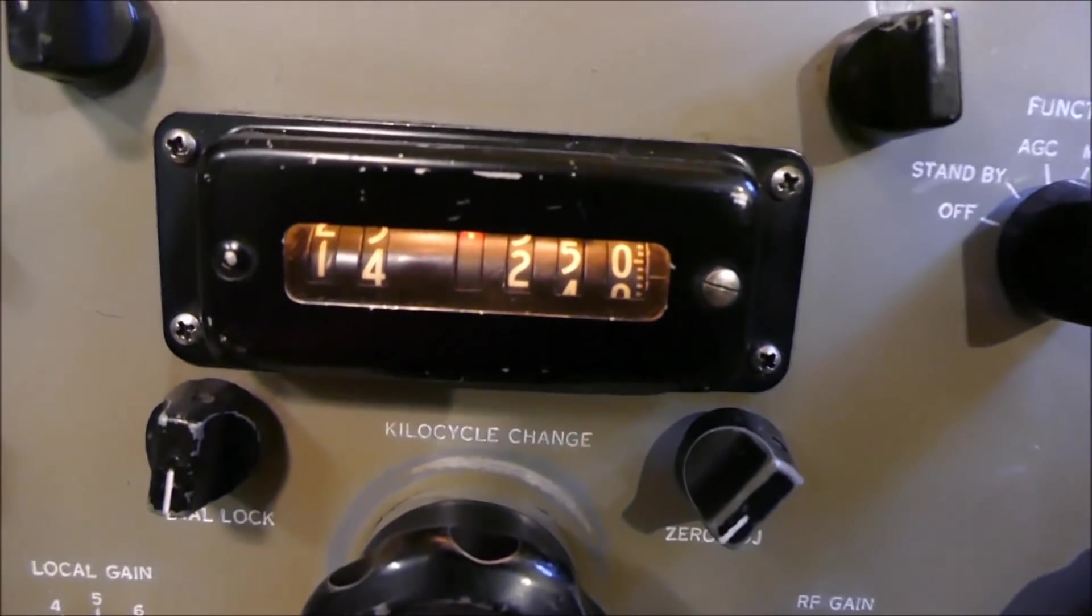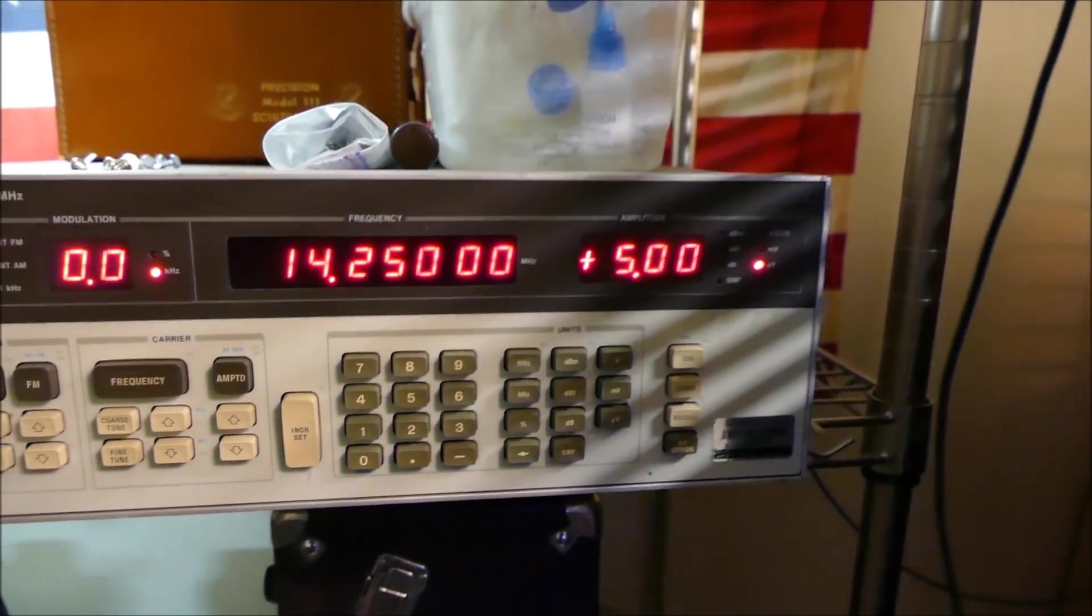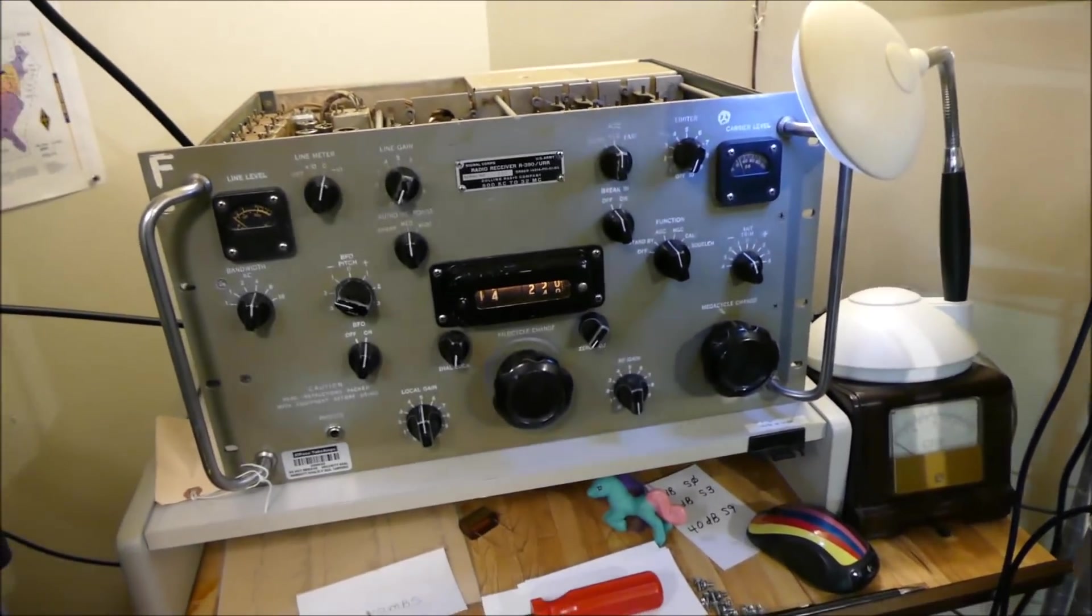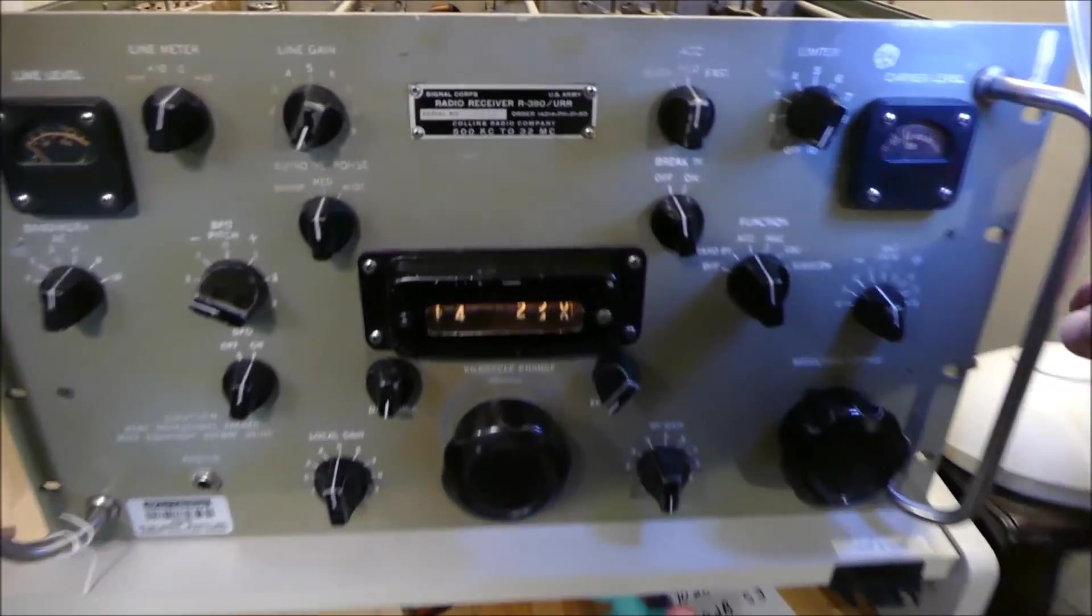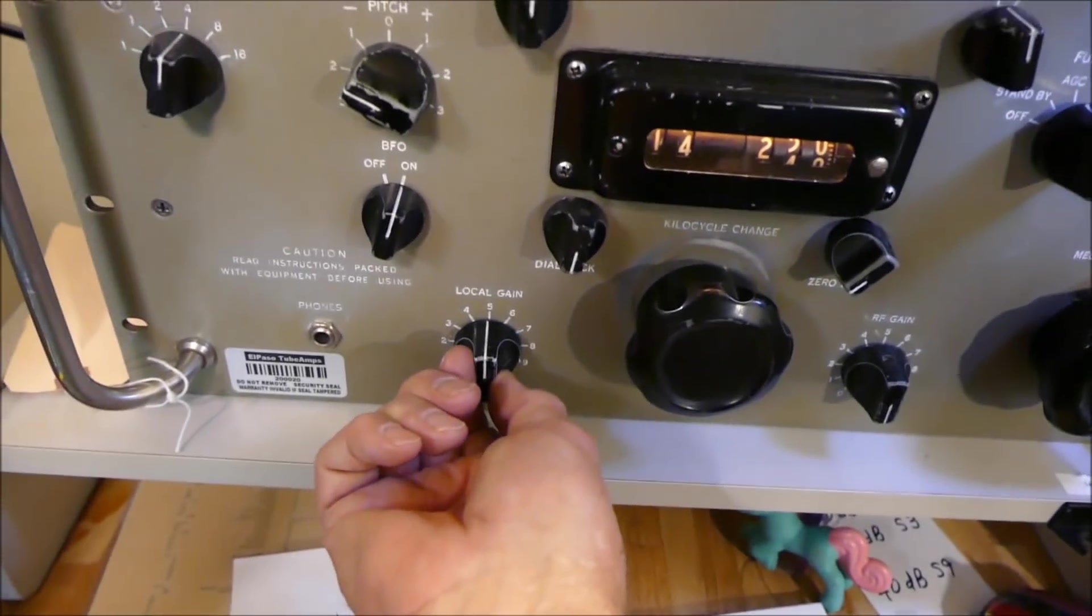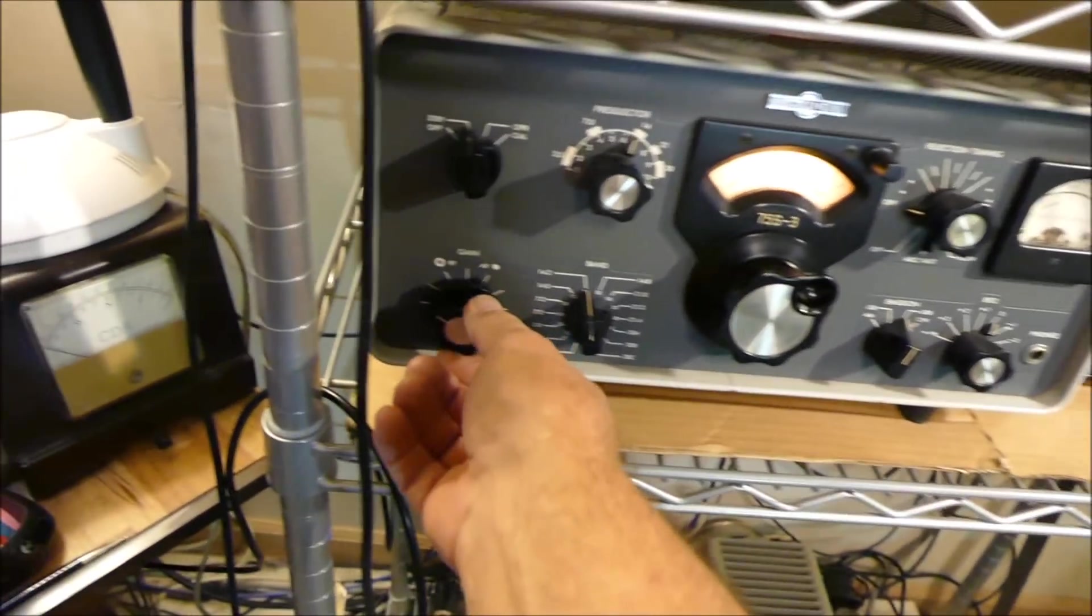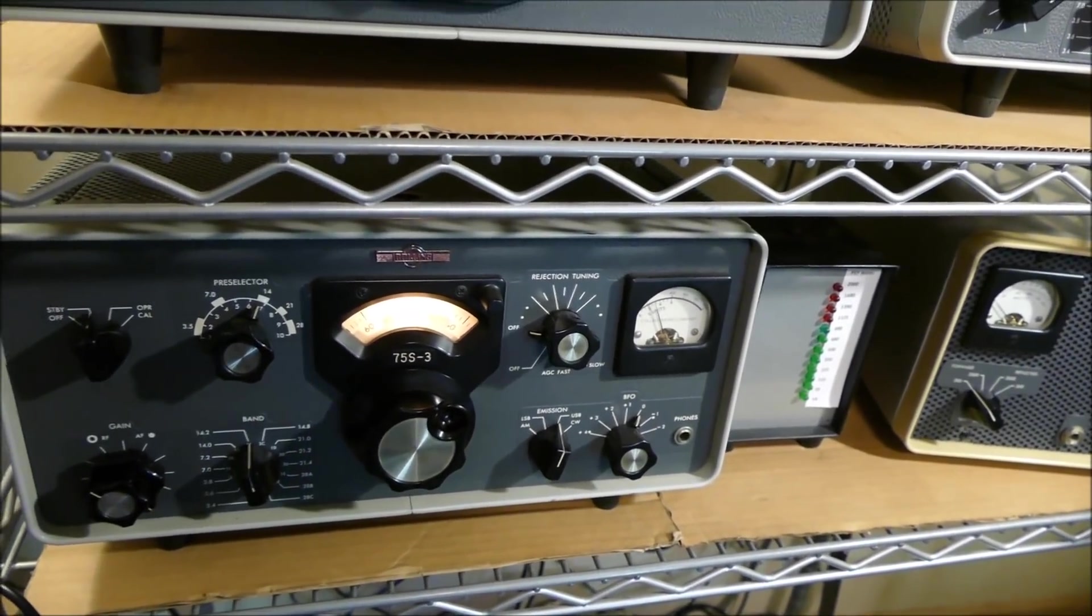That's the R390. That's the 75 S3. Now let's go down to maybe five microvolts. I know the goal is to make these things hear about one microvolt. There's the R390. We're going to set it at five microvolts. I'm going to turn it off and go to the other one. This one's going to get really loud - it's just got more volume. That's what five microvolts sounds like on this one.